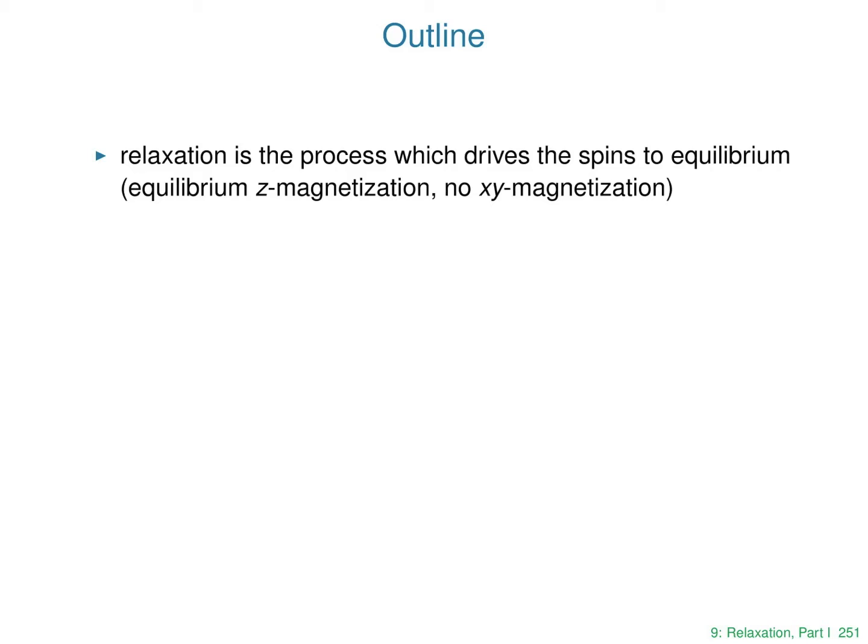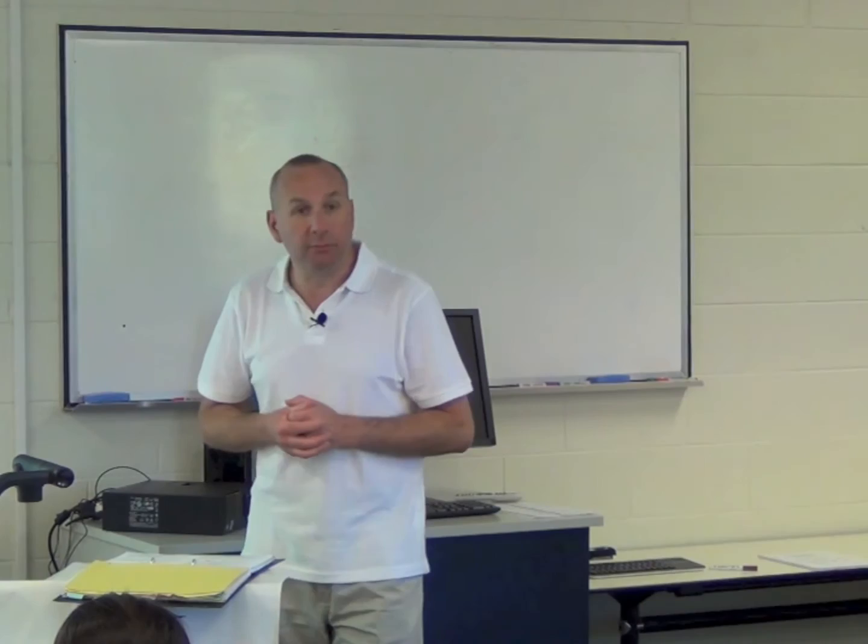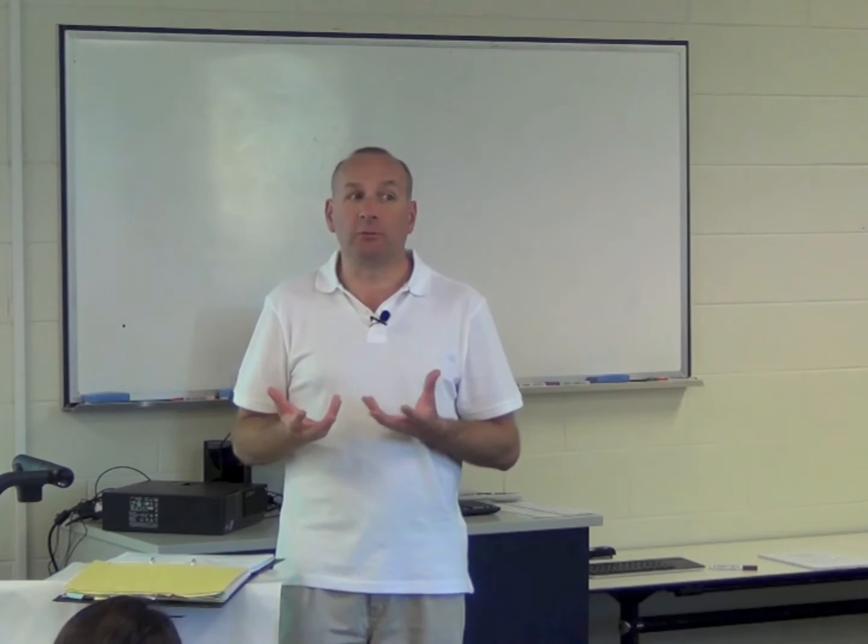So what is relaxation? It's the process which drives the spins to equilibrium. At equilibrium, you've got magnetization along the Z-axis and there is no X and Y magnetization. So going to equilibrium means generating the equilibrium Z magnetization and the X and Y magnetization going away. When you're at equilibrium, nothing happens — that could be one of the definitions. When you've got a system that has no time dependence, it's at equilibrium. The Z magnetization doesn't precess, so it's not changing with time. X and Y magnetization does precess, but at equilibrium there's no X or Y magnetization, so nothing is happening.